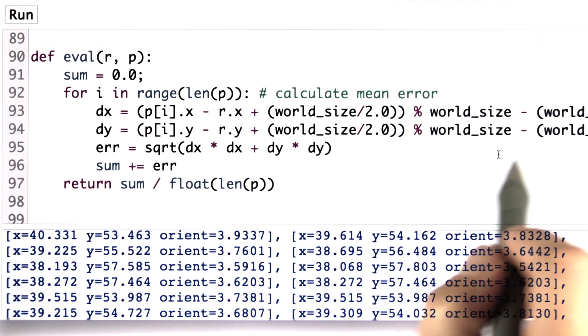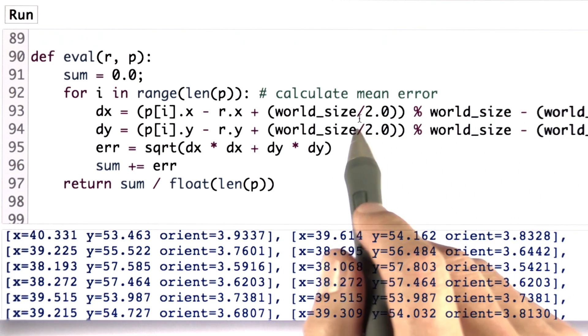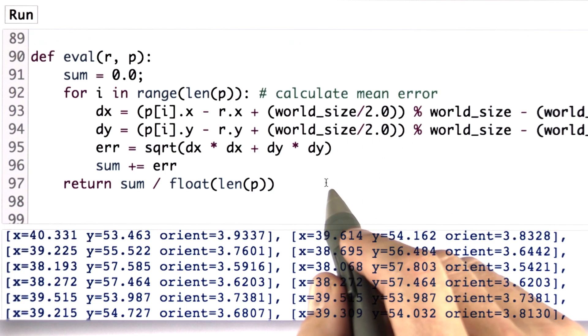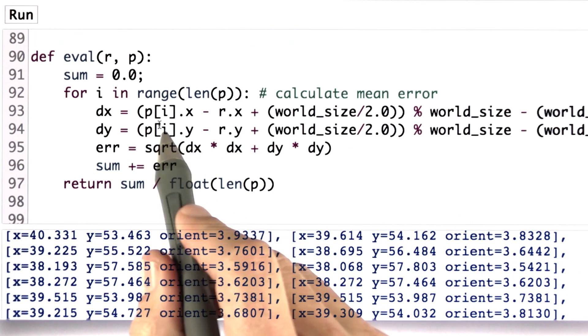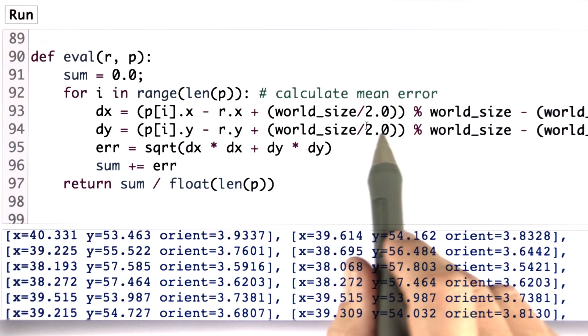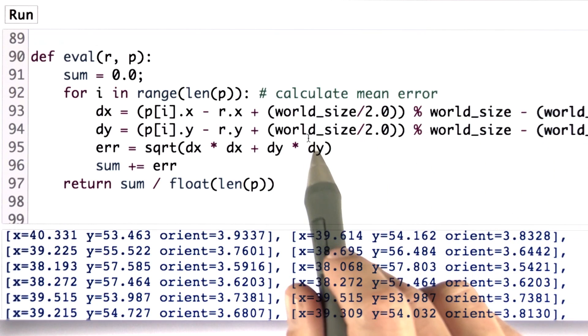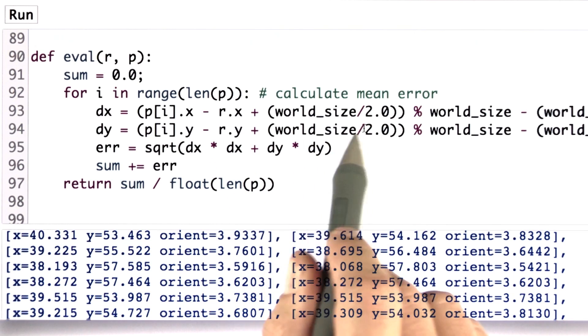Now, there's some funny stuff over here. The reason is the world is cyclic. And it might be that the robot is at 0.0 or at 99.9. These are about the same values, but according to this calculation they'll be different. So by this normalization, I make sure that the cyclicity of the world doesn't negatively affect the estimated error if I'm close to the boundary.